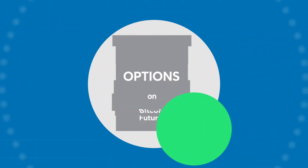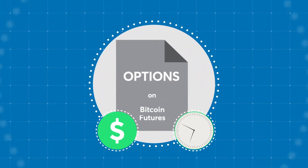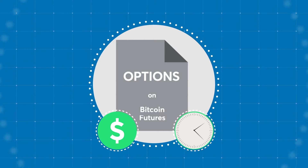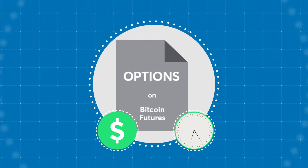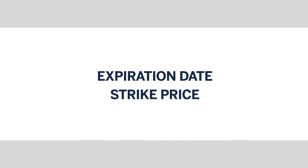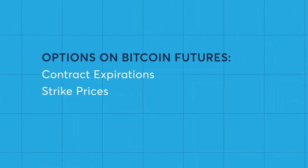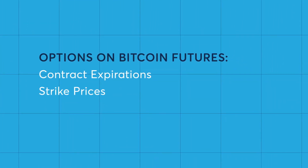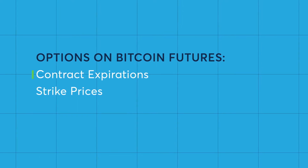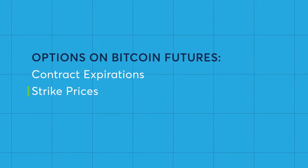Option traders must decide the time period and price level they want to participate in the market and plan their trading strategies accordingly. These are referred to as the options expiration date and the strike price. When trading options on Bitcoin futures at CME Group, traders have the flexibility to choose between different contract expirations and strike prices.